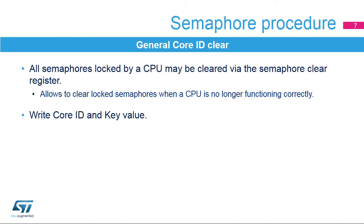In the case where locked semaphores from a malfunctioning CPU are to be cleared, this can be done by writing a key value in the HSEM key R register and writing the key value in the core ID in the HSEM CR register. It will clear all semaphores locked by the corresponding core ID. A semaphore get-free interrupt will be generated when enabled.